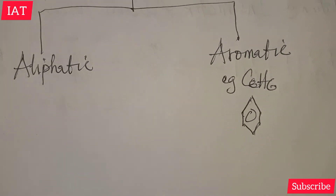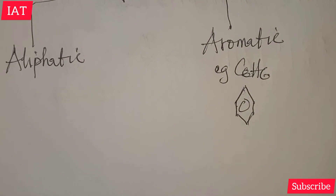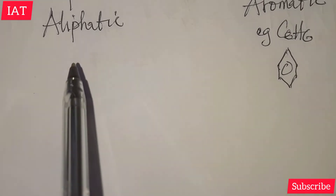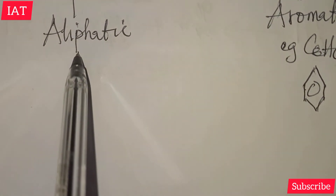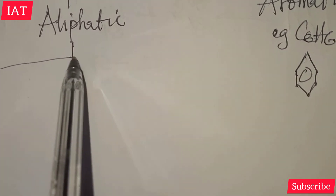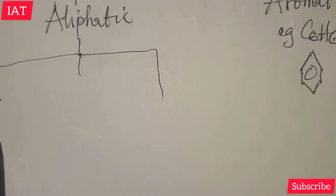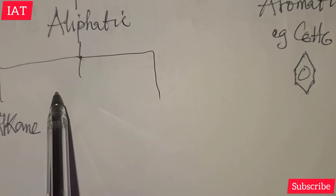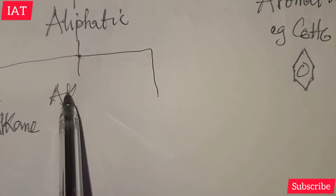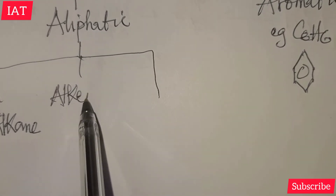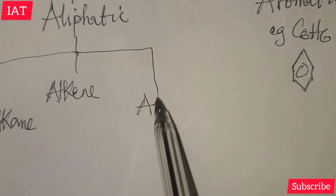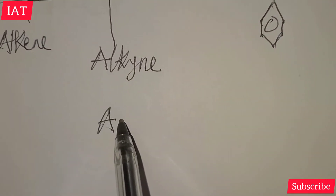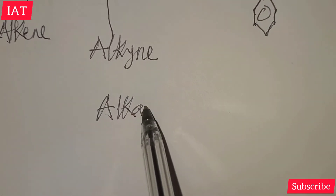But before we consider the aromatic, let's focus on the aliphatic class of hydrocarbon. In the aliphatic class, this is also classified into three forms: one is the alkane, another one is the alkene, and then we also have the alkyne.